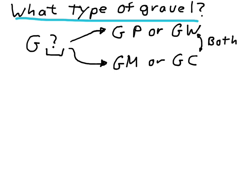Or, if it has a medium amount of fine-grained material, we'll actually have to classify it with both of these types. It will be either a GP-GC, or a GP-GM, or a GW-GM, etc.